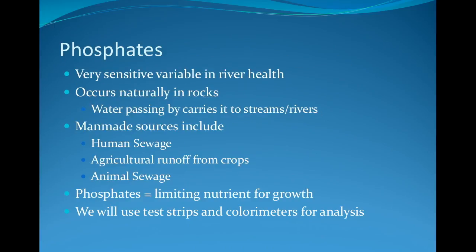Phosphates are a nutrient used by plants for photosynthesis. They naturally occur in rocks, and water passing by carries them to streams and rivers. Man-made sources include human sewage, agricultural runoff from crops, animal sewage, and other agricultural uses. Phosphates are a limiting nutrient for growth. We will use test strips and colorimeters for analysis.